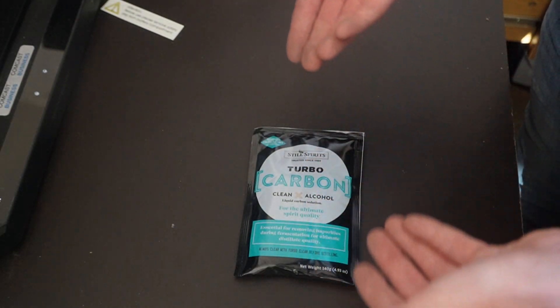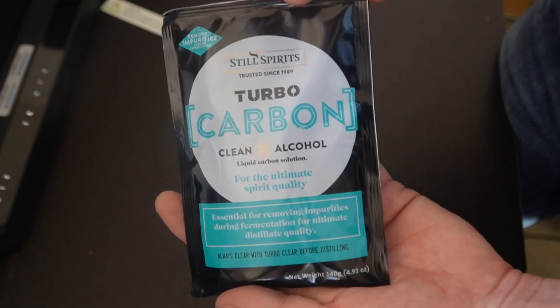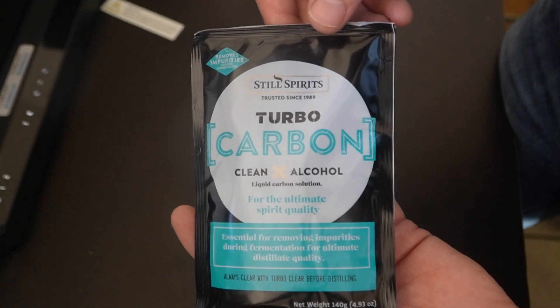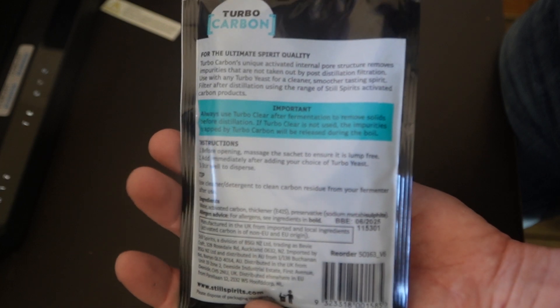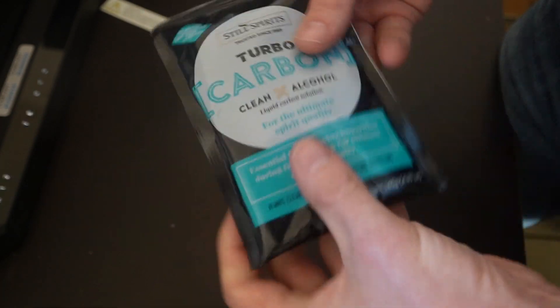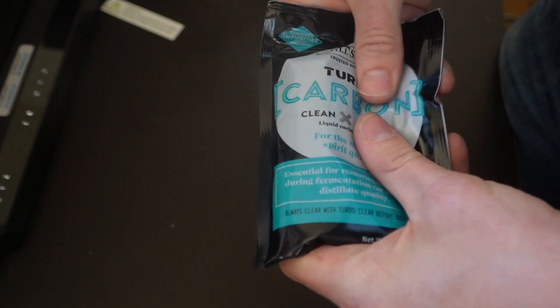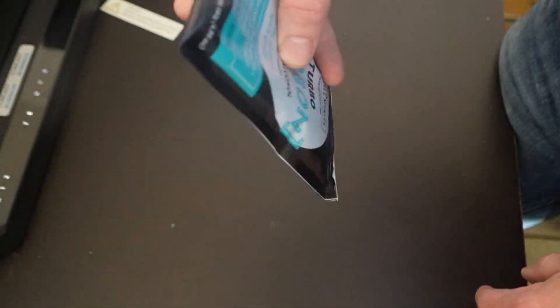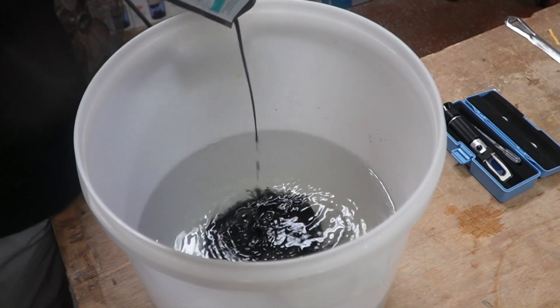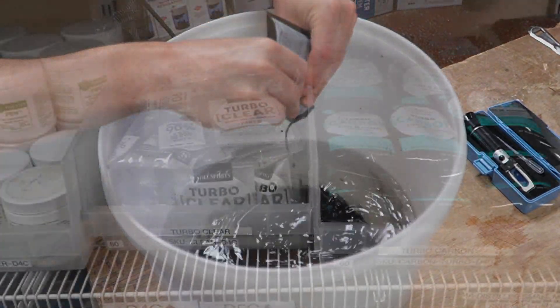Turbo carbon is designed to remove impurities that are created in your fermentation naturally. Right after pitching yeast, massage the packet and then add to the fermenter. This is definitely a different application than your typical carbon applications which is done post-distillation. I don't really find this method as effective as post-distillation carbon filtration, but it does help your wash or mash come out a little cleaner with less impurities and off flavors when you distill it.